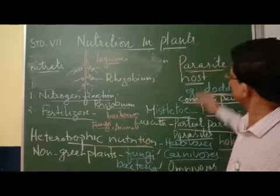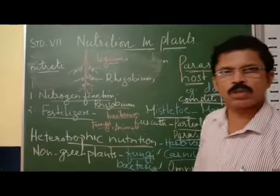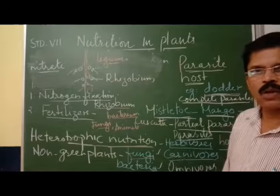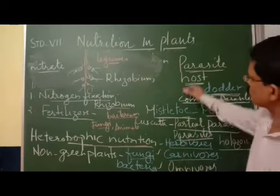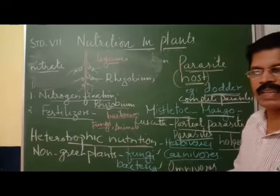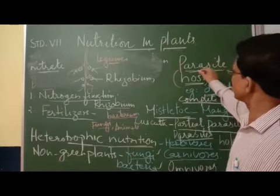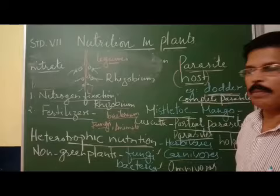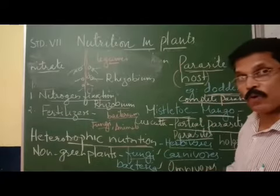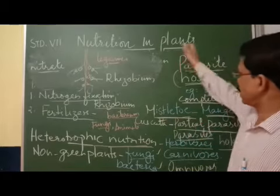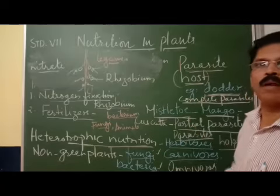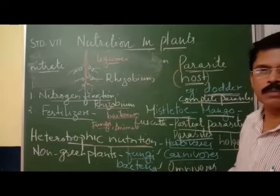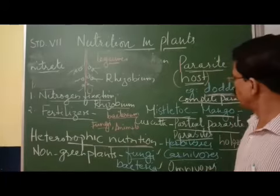Parasites are organisms — particularly microbes and some plants — which get food from the host organism. The host organism provides food to the parasites. This is called parasitic nutrition. Dodder is an example of a complete parasite, meaning it directly gets food from the host plant. A complete parasite cannot synthesize food at all and gets complete food from the host plant.